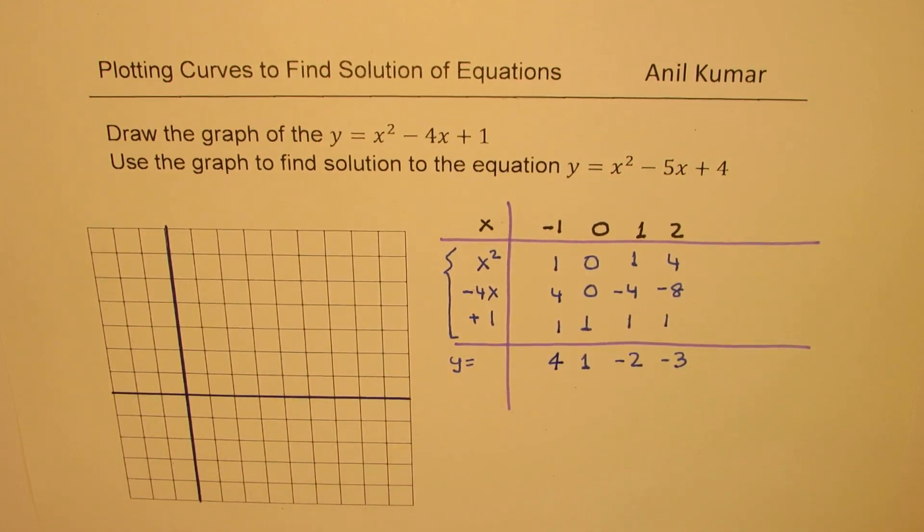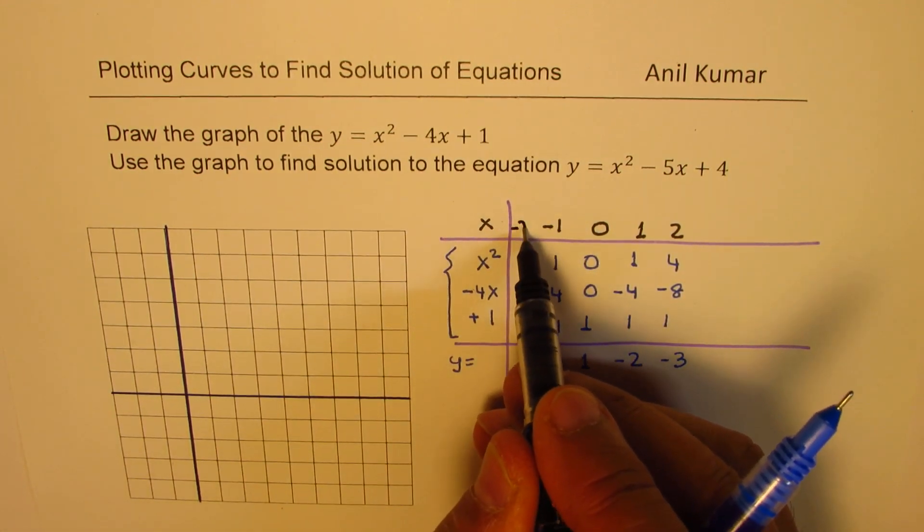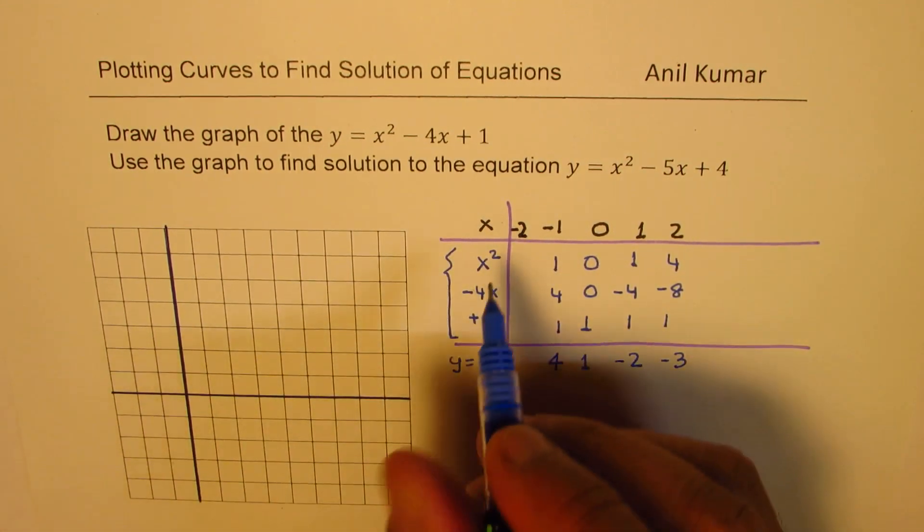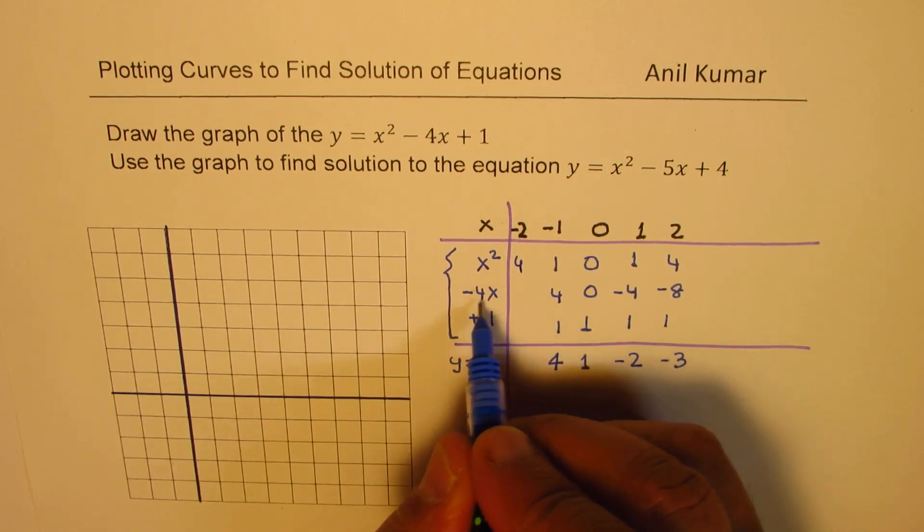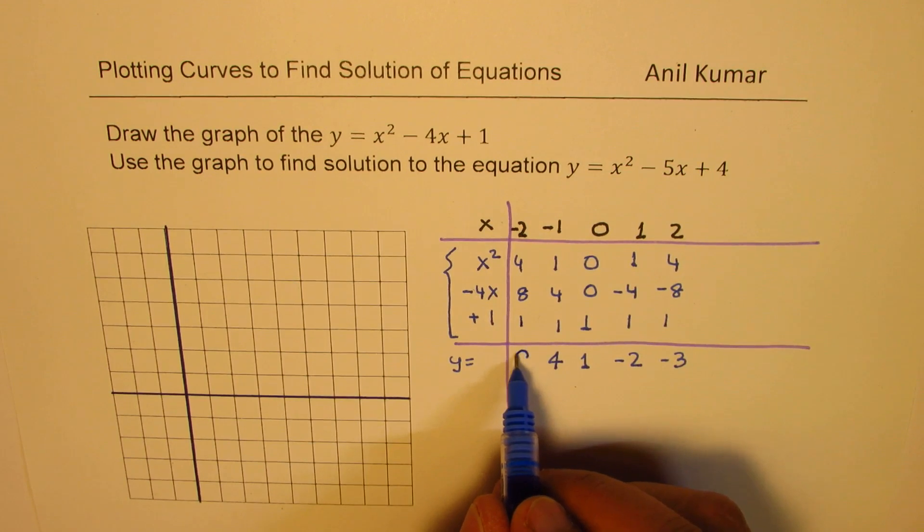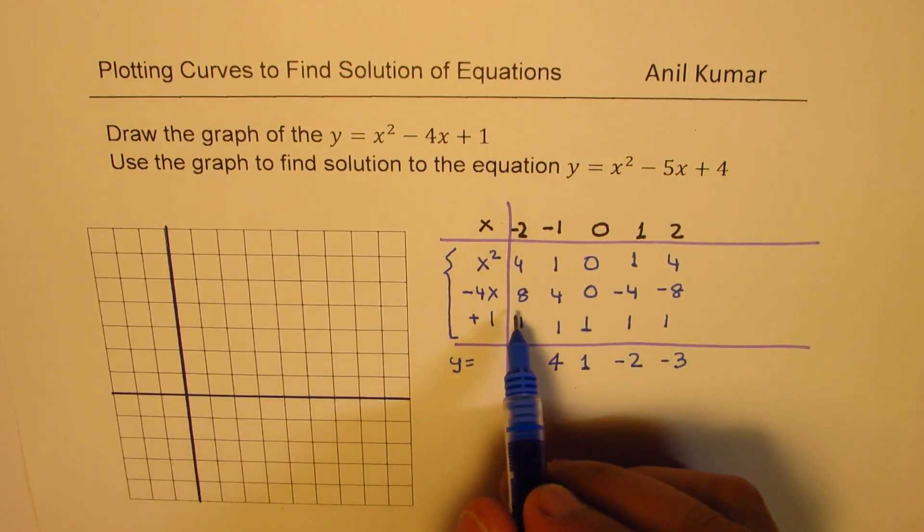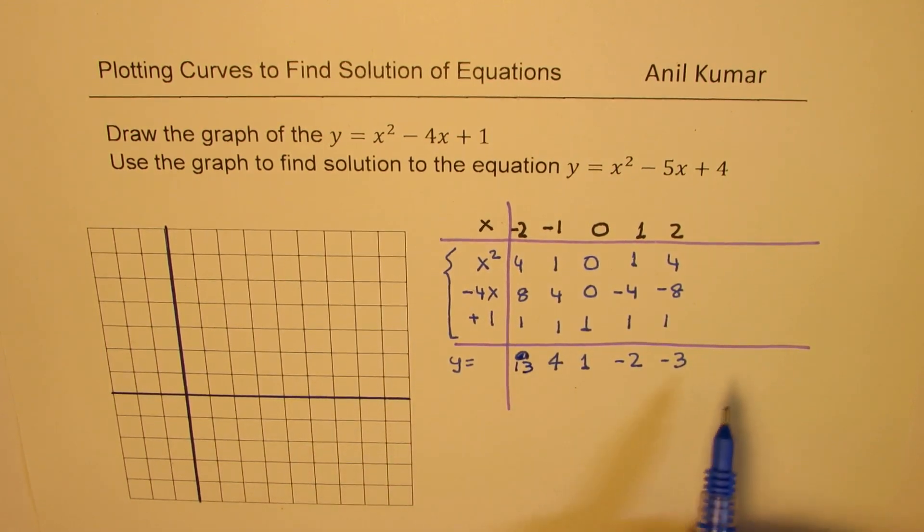So we get a positive value of 6. For minus 2, square is 4. This is 8 plus, and plus 1. We get positive 13. Sorry, 8 plus positive 8 and 4 is 13. Right? Positive 13.